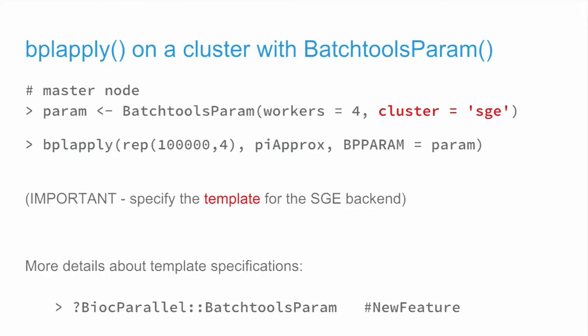But now if you want to take it to a cluster, you log into whatever master node you have and you want to use the grid engine. For this example, we're using the SunGrid engine, and you say I have four workers, my cluster is an SGE cluster, and my param is called a BatchToolsParam. This is a new implementation, and you pass this parameter to your function BPLApply, and the magic happens on your SunGrid engine cluster. Based on the institution, it's important that you specify the template for your SunGrid engine, otherwise it'll use a default one which might not work.